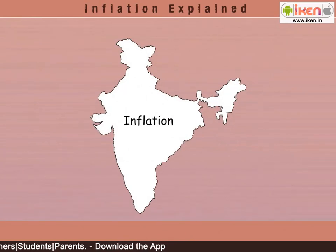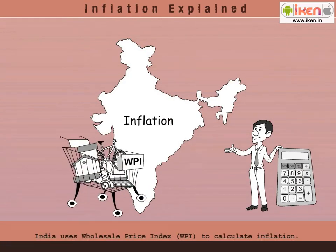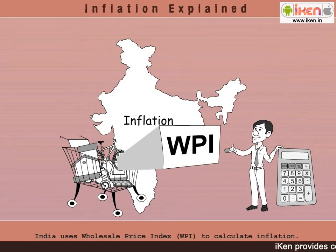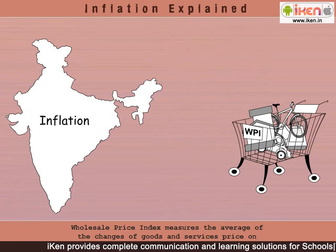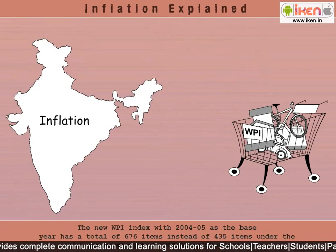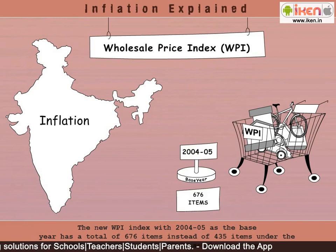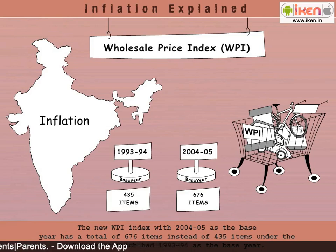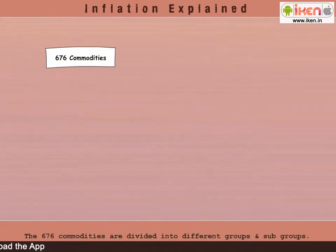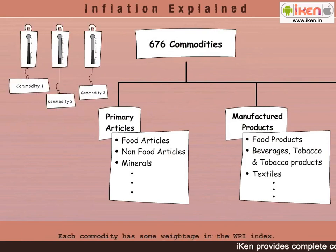Now let us see how inflation is calculated in India. India uses the Wholesale Price Index, or WPI, to calculate inflation. The WPI measures the average change in prices of goods and services on the basis of wholesale prices. India has switched to a new series of WPI with 2004 to 2005 as the base year, from the previously used 1993 to 1994 financial year. These commodities are divided into different groups and subgroups, and each commodity has some weightage in the WPI index.